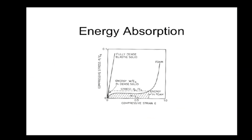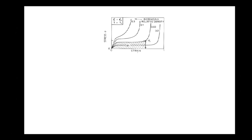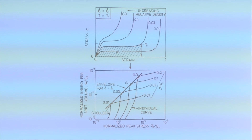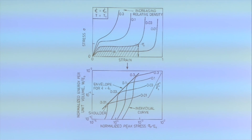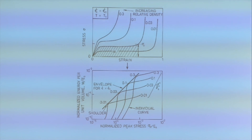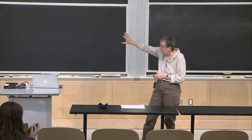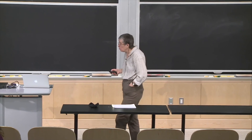The idea is that you have your compressive stress-strain curve — here's a series of curves for different densities of a foam, all done at the same strain rate and temperature. We can turn those into energy absorption diagrams. On this log plot, here's the energy absorption and here's the peak stress — that's the peak stress up to some level of energy absorbed. We've normalized both of those by the solid modulus. You can either get these from experiments or use the foam models to do it as well.